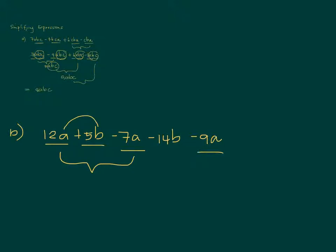So 12a minus 7a equals 5a. But you still have minus 9a. What is 5a minus 9a? Think carefully — count again. What's the difference of 5 and 9? Remember what we did yesterday.